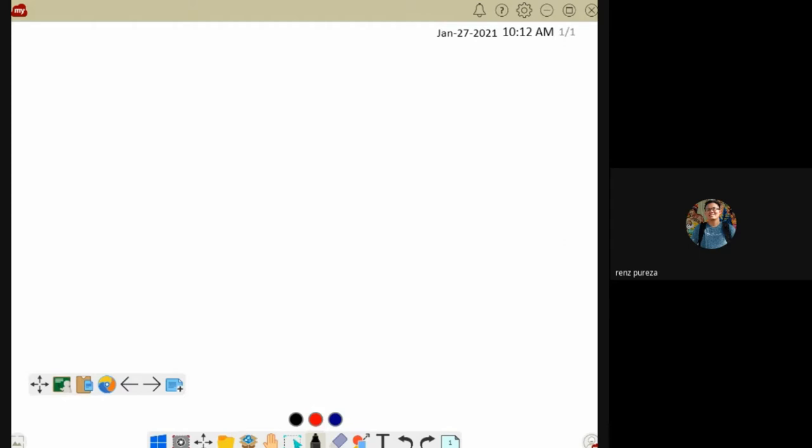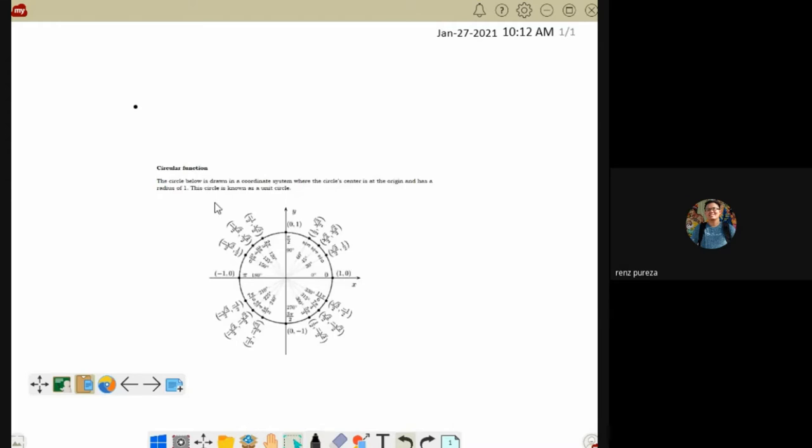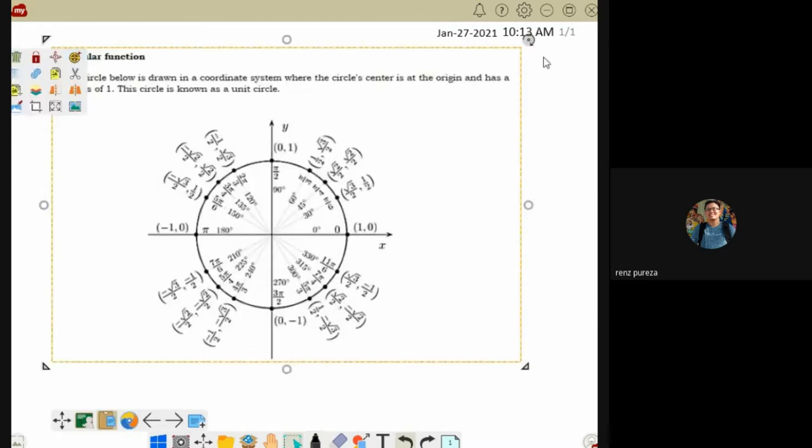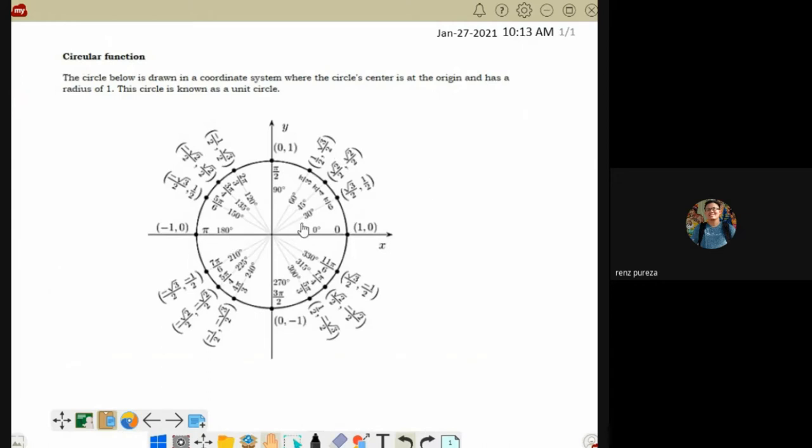So this is an example of a unit circle. It's called a unit circle because this is a circle made up of one unit as their radius.